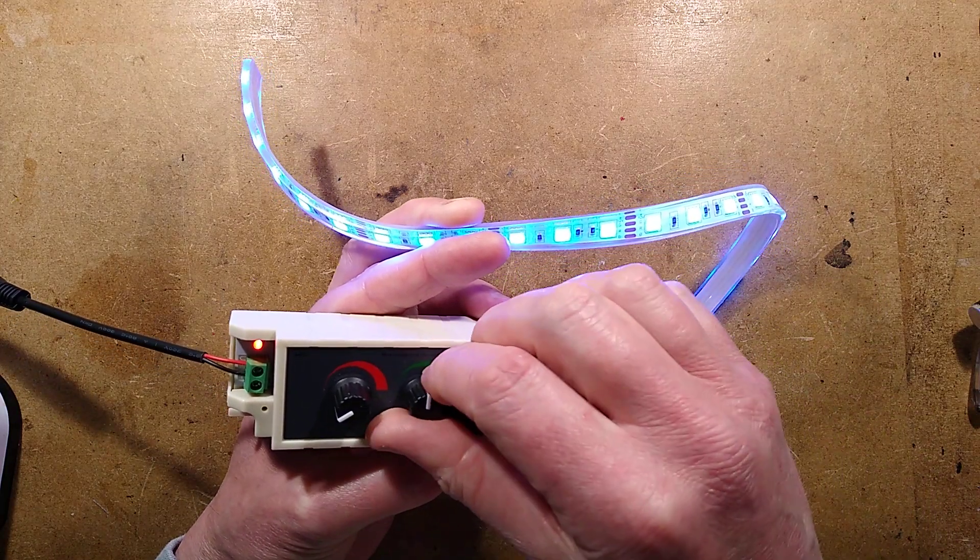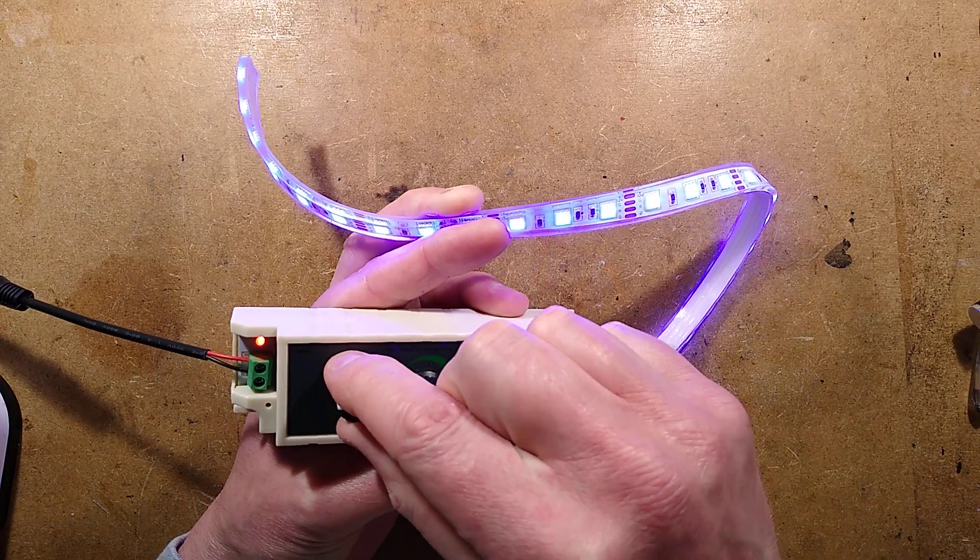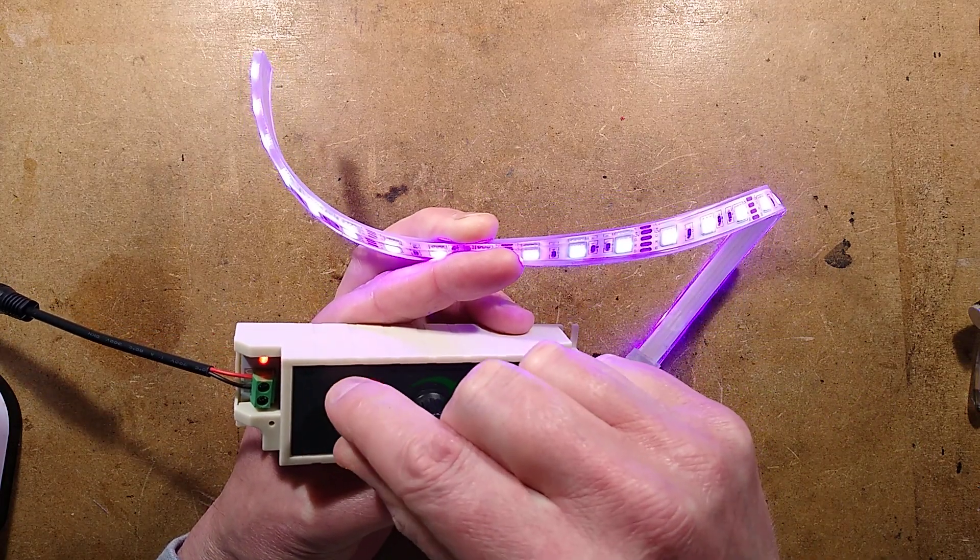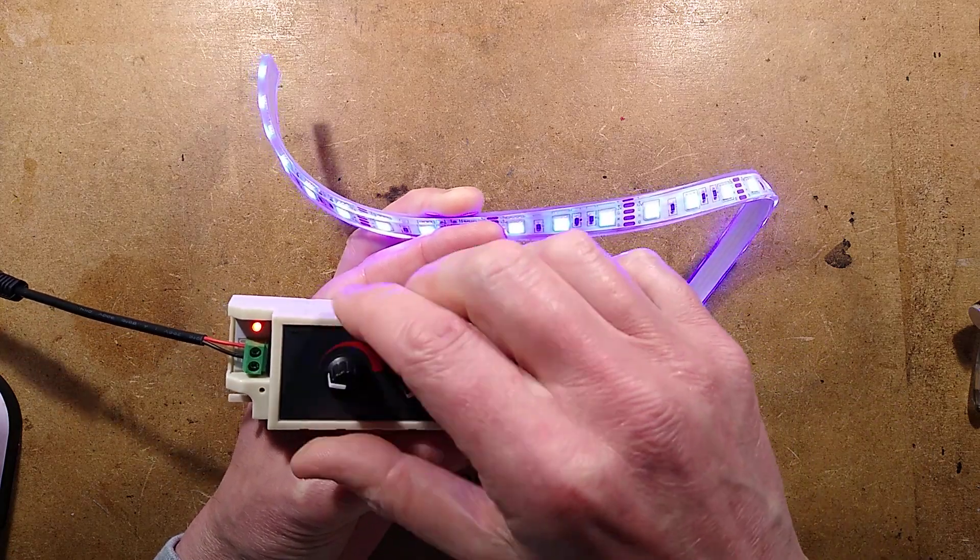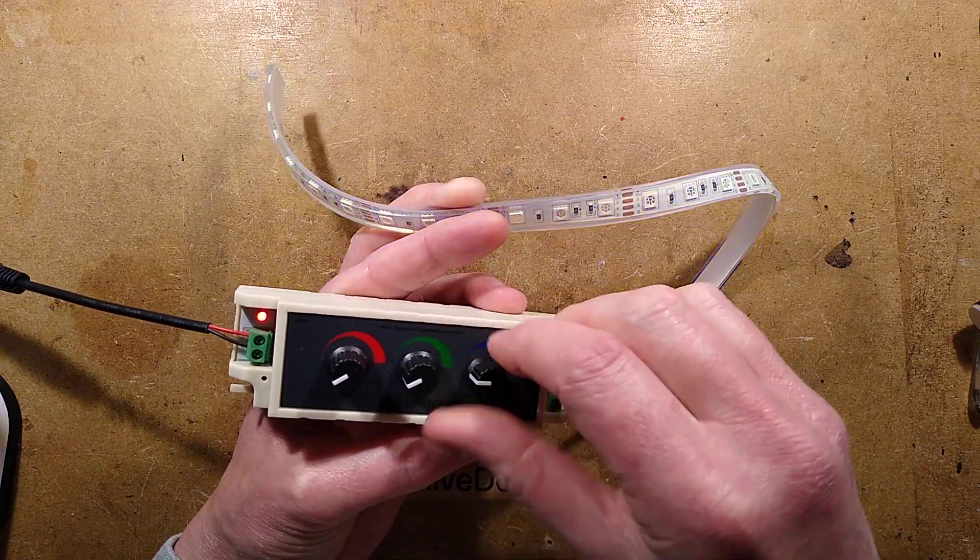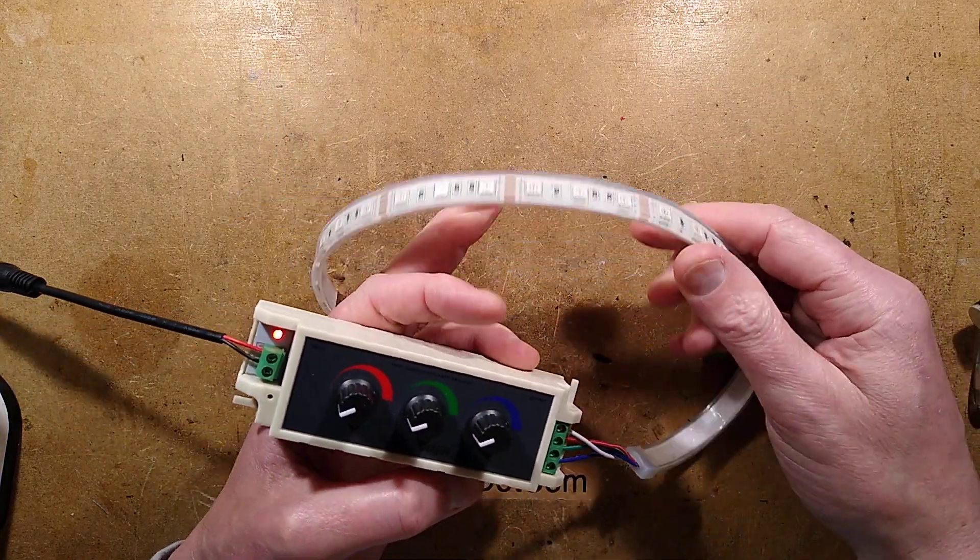there's blue and then you can mix colours. So say I want a turquoise, I can bring in both blue and green or I can bring up red and blue and get some interesting magenta pinky type shades. Effectively with this you can get every colour that you can possibly achieve out of this tape.